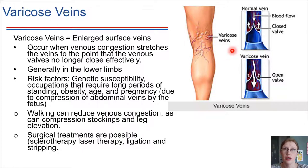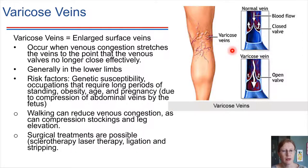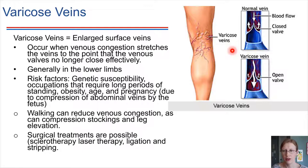Varicose veins generally happen in the lower limbs, where gravity pulls blood downward and contributes to the problem. There are genetic risk factors — some people are more genetically susceptible. Lifestyle also plays a role: occupations requiring a lot of sitting increase risk. A helpful habit is setting a timer every hour to get up and move around for about five minutes, which can help prevent varicose veins and many other problems.